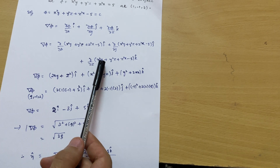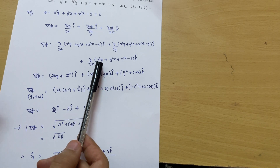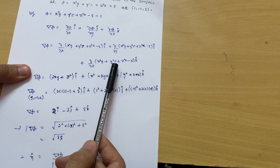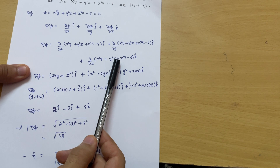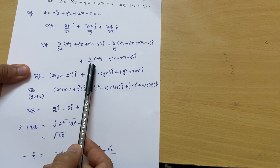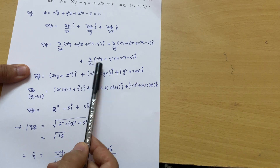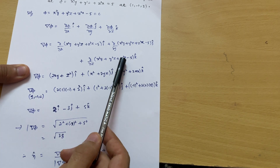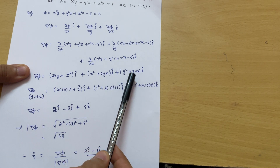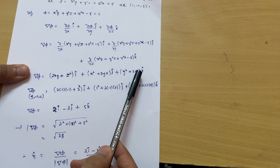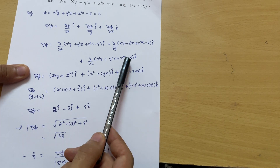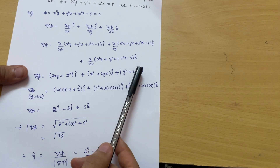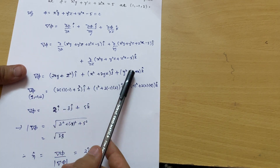For the k̂ component, differentiating with respect to z: x²y has no z term, so it gives 0. For y²z, the derivative of z is 1, so we get y². For z²x, the derivative of z² is 2z, and x remains as it is, giving 2zx. The constant 5 differentiates to 0. The z-component is (y² + 2zx) k̂.